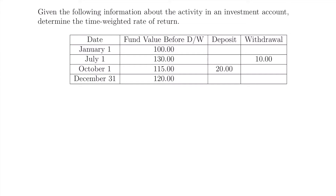Here's our second example. Given the following information about the activity in an investment account, determine the time-weighted rate of return. This is a slightly different problem: instead of having a scenario described, we are shown the activity in an investment account with specific dates, the fund balance on those dates before any deposits or withdrawals, and any deposits or withdrawals that took place. The column labeled 'fund value before D/W' means the value before any deposits or withdrawals.